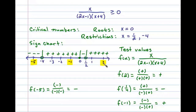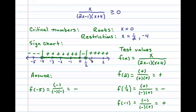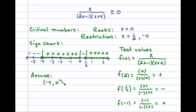This completes our sign chart. We use it to answer: when is this rational expression greater than or equal to zero? From the sign chart, we obtain positive results when x is between negative 4 and 0, and also when x is greater than 1/2. We can write this in interval notation as (−4, 0] union (1/2, ∞).